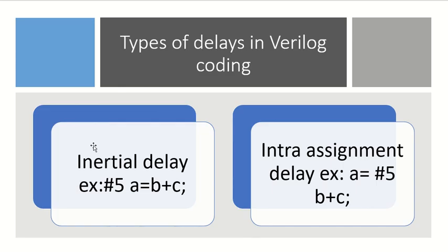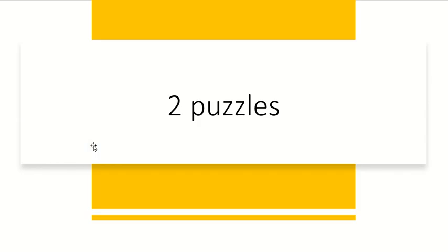The next question was: what are the types of delays in Verilog coding? My answer was two types — inertial delay and intra-assignment delay. In inertial delay, the assignment is done first and then the delay is applied; for example, 'a = b + c' is assigned first, then the delay is given. In intra-assignment delay, the operation 'b + c' is computed, then the delay is applied, and then the result is assigned to the variable.